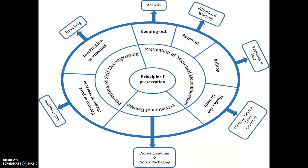Prevention of microbial decomposition can also be achieved by hindering the growth and activity of microorganisms. This can be done either by low temperature, drying, anaerobic conditions, or by the use of chemicals.